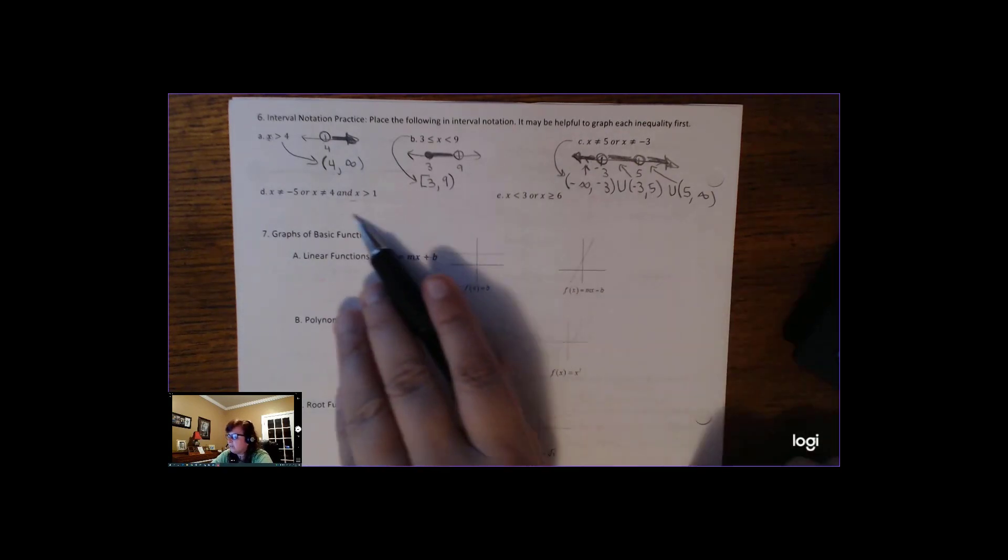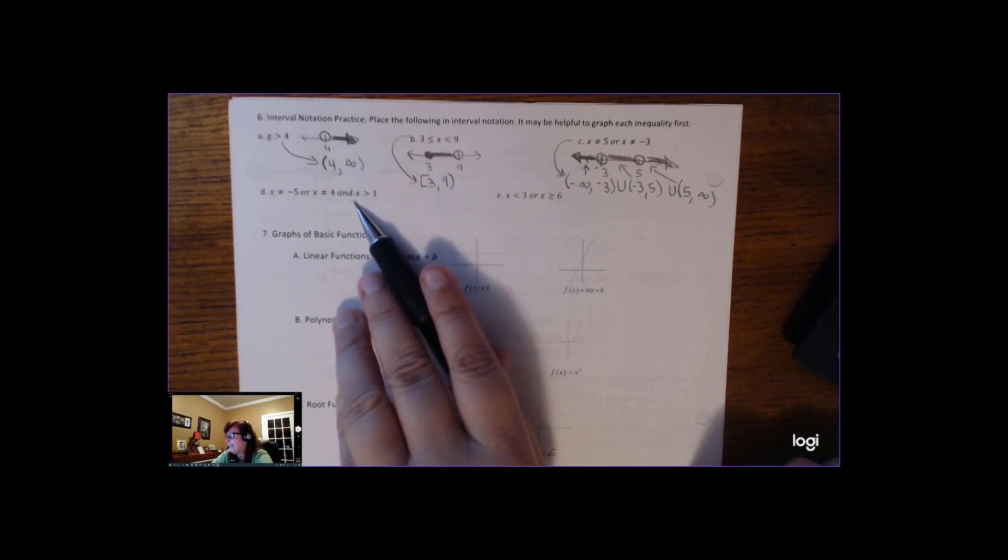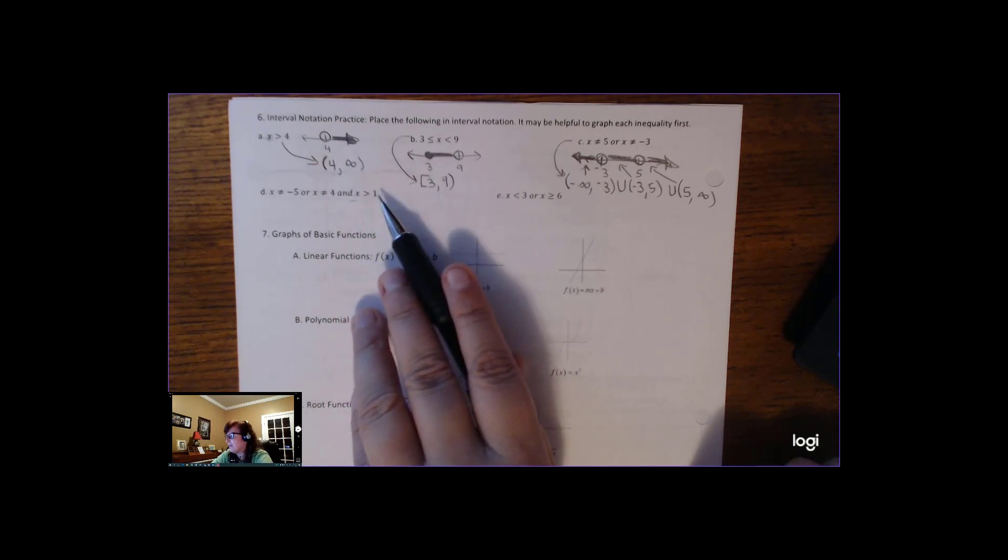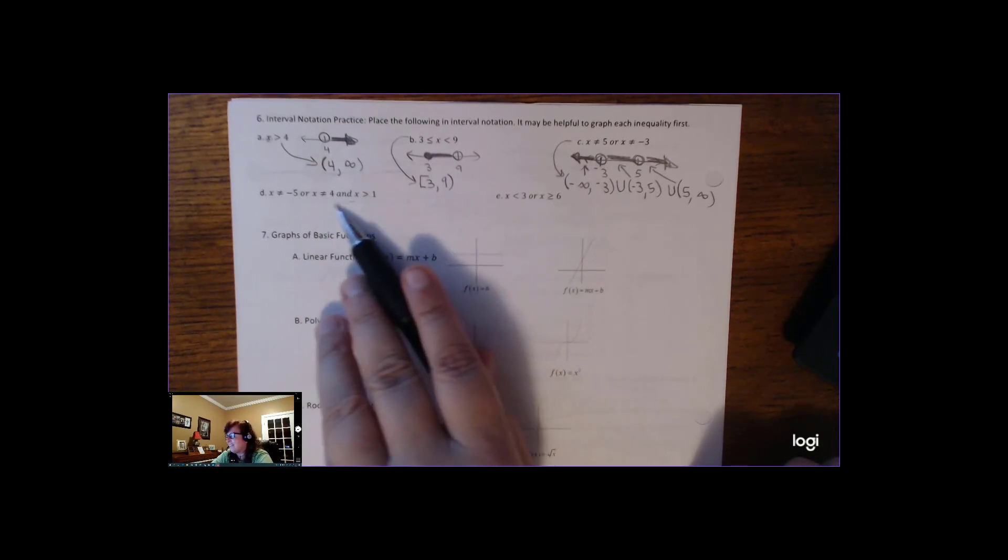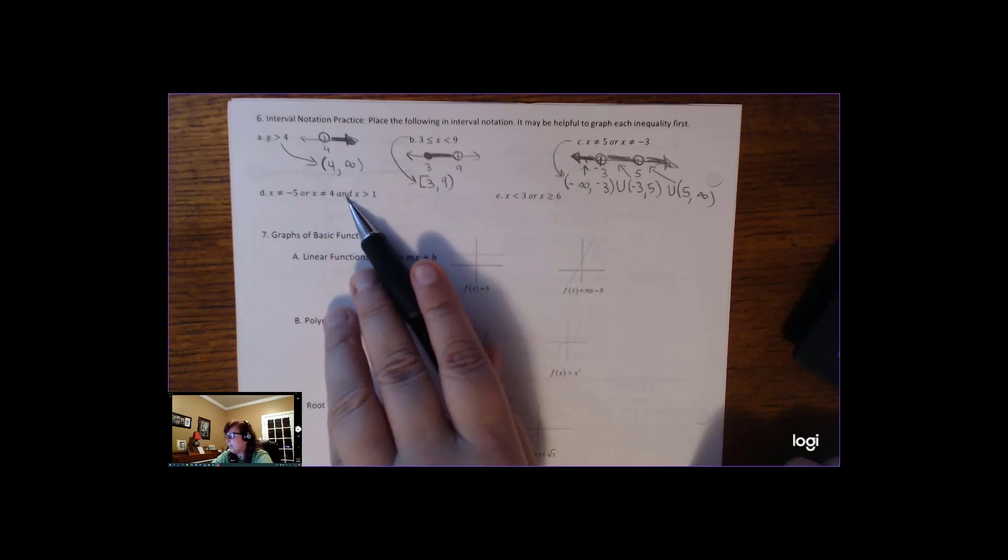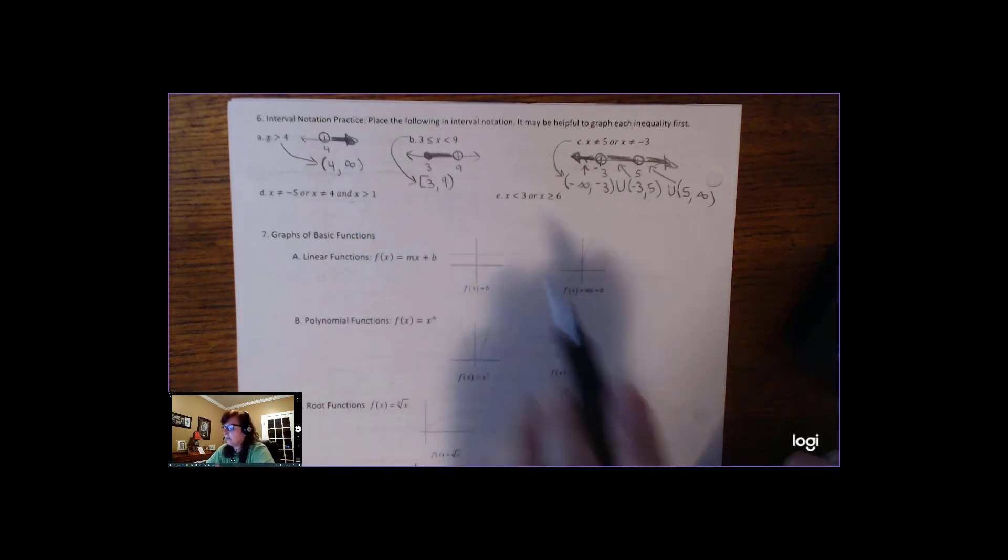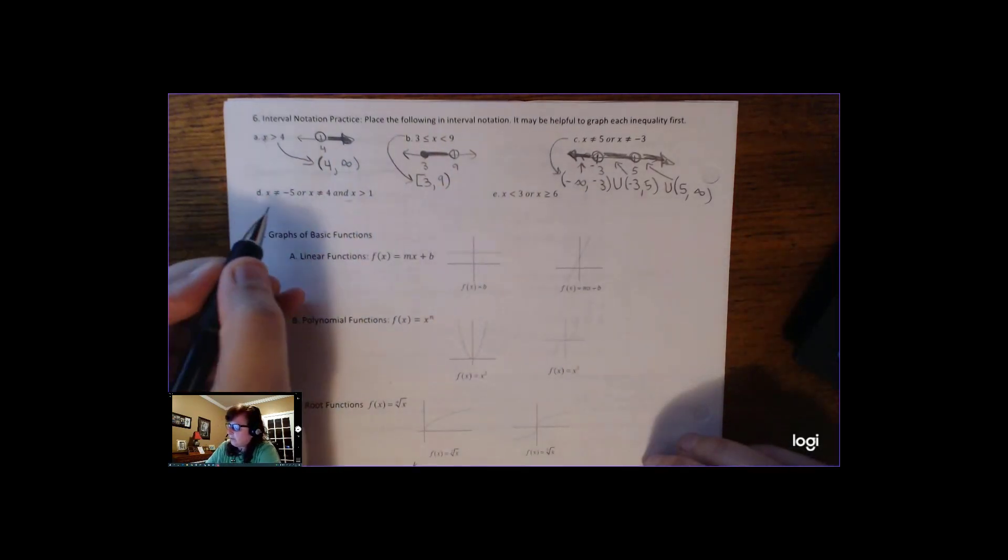Alright, and then we get some pretty tricky ones here. So here, x is not equal to negative 5 or x is not equal to 4 and x is greater than 1. So now we just get into the difference between or and and. And means that both things have to happen. So what would be a smart idea here would be to graph two separate number lines.